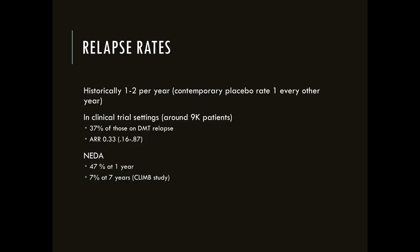How often do relapses occur? This has changed. When we first did clinical trials on disease-modifying therapies, we saw relapse rates of maybe one or two per year. The contemporary placebo rate is now about one relapse every other year. So untreated patients today have about one relapse every other year — not as common as 25 to 30 years ago when people were having one to two relapses a year.